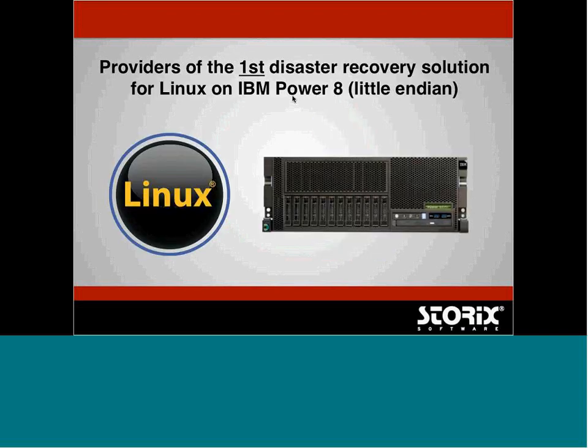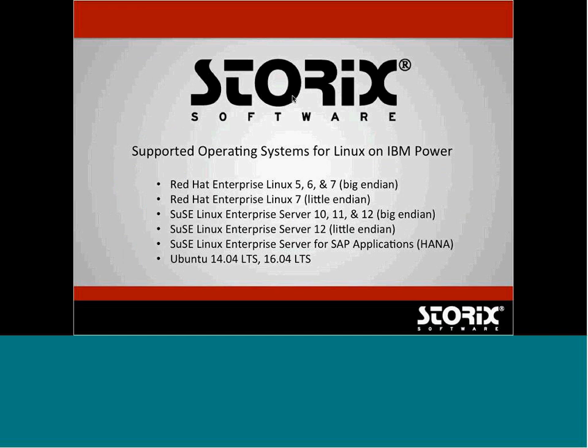We are also the first providers of a disaster recovery solution for Linux on IBM Power 8 Little Endian, and we support both Big Endian and Little Endian for Linux. For our supported operating systems: for AIX, we support everything from AIX 5.1 all the way up to the latest AIX 7.2. For Linux, we support Red Hat Enterprise Linux 5 through 7, SUSE Linux Enterprise from 10 to 12 — including SUSE Linux Enterprise Server for SAP HANA installs on Linux — as well as Ubuntu 14.04 and 16.04 long-term support.